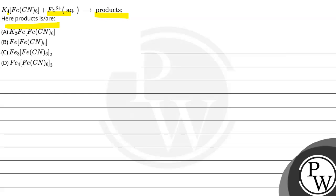So there are four options A, B, C, and D, and we have to find out the correct product. Let's solve this question.